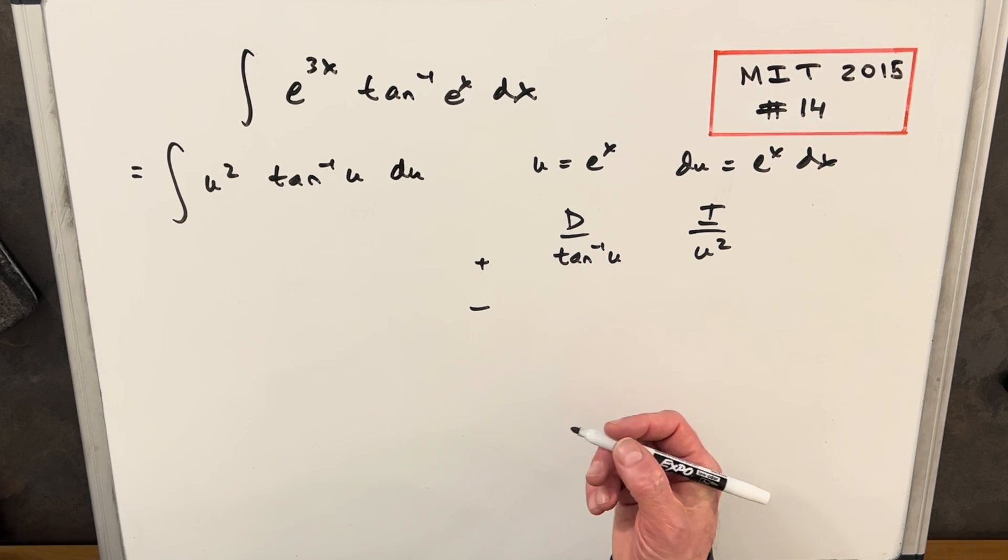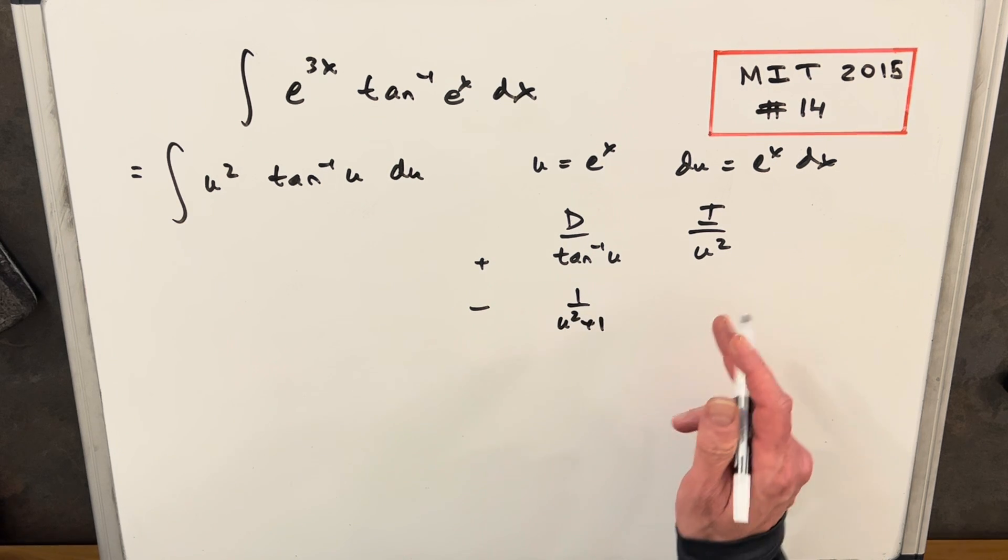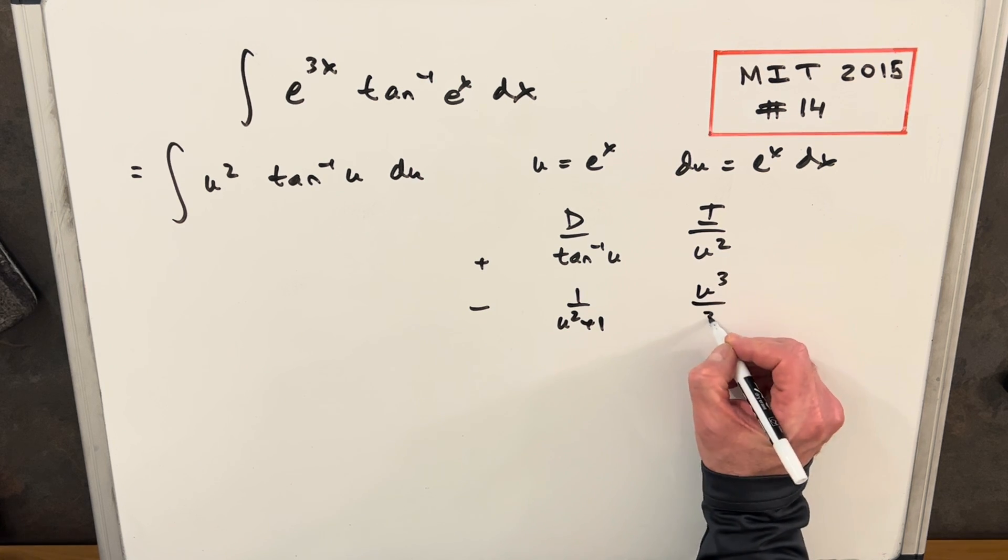So first of all, the derivative of tan inverse is going to be 1 over u squared plus 1, and then the integral here of u squared is just going to be u cubed over 3.